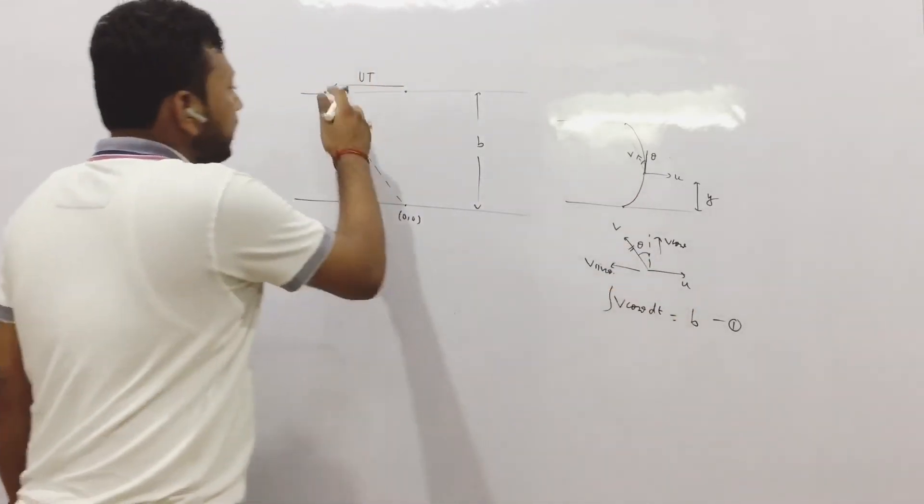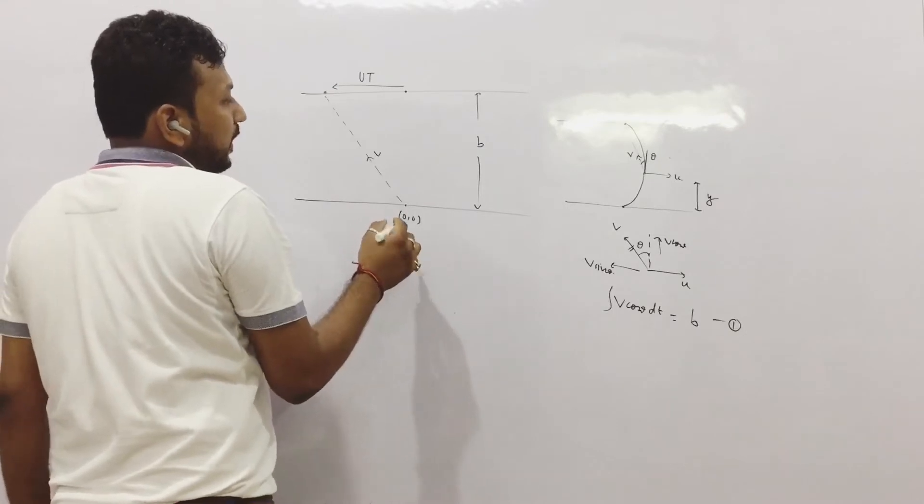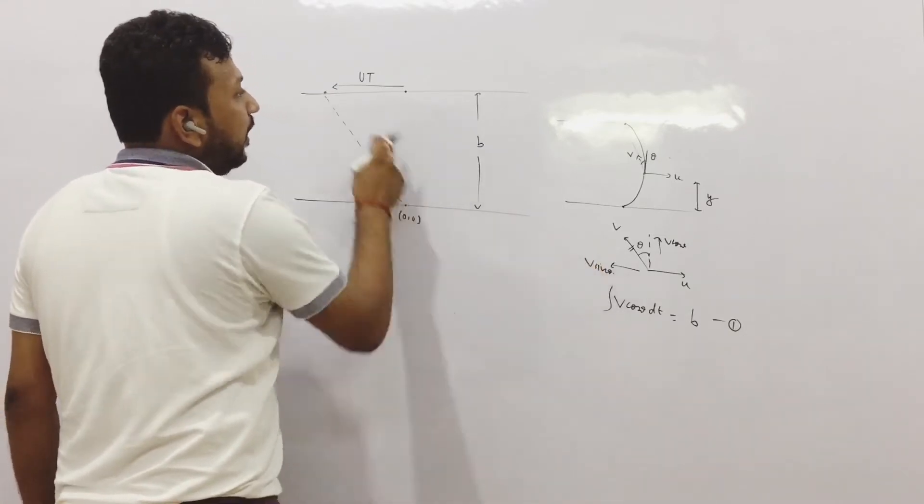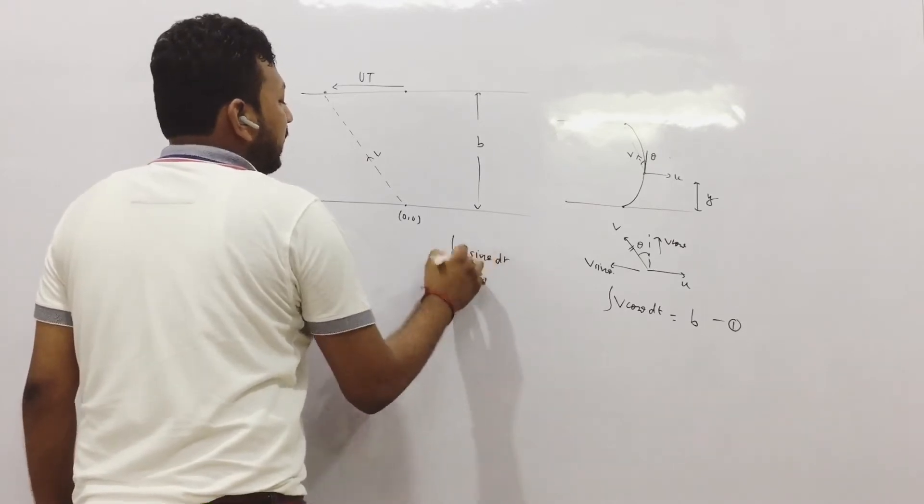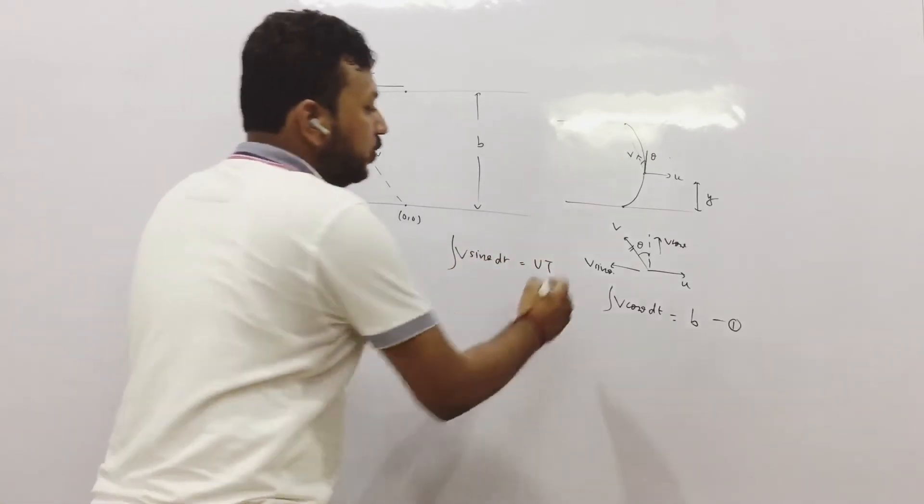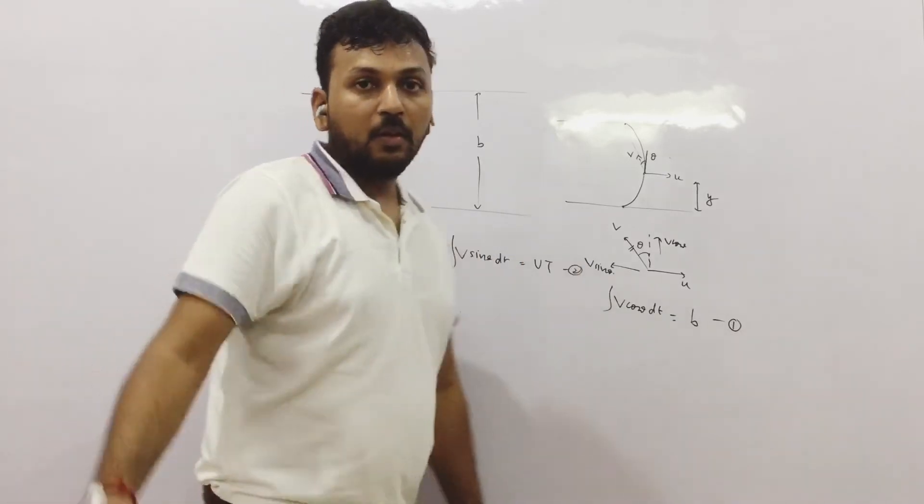So if I see from this situation only, we can see that v sin theta covered ut. That means v sin theta into dt integration is ut. Second equation is formed.